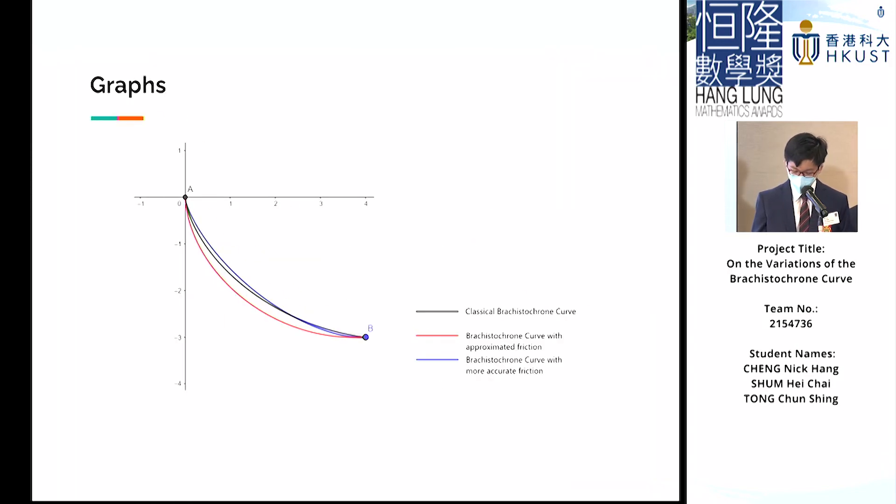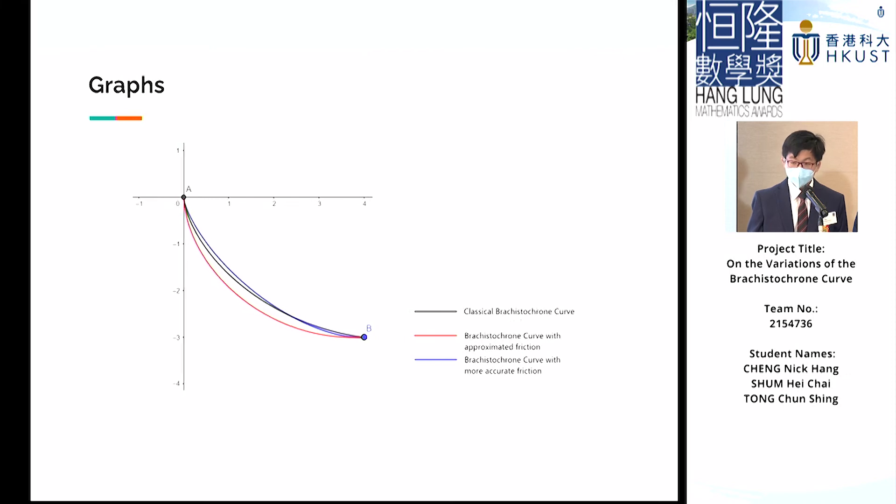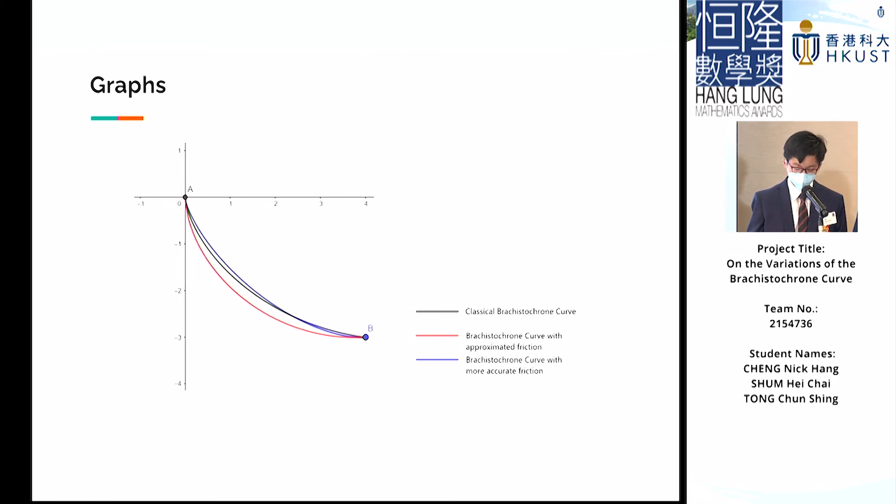This graph is an example that compares the shapes of the Brachistochrone curves with and without friction, with the black, red, and blue curves being the Brachistochrone curves with no, approximated, and accurate friction respectively, taking the coefficient of friction to be 0.34. Since the effect of gravity is much more significant than that of friction when μ is small, the shapes of the curves are more or less similar, and when μ tends to 0, those three curves will coincide.